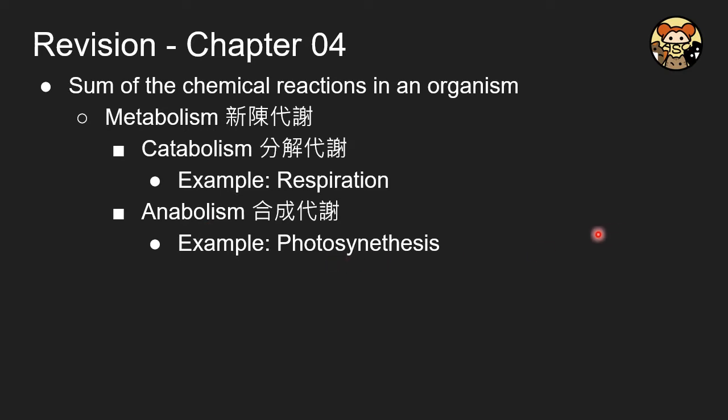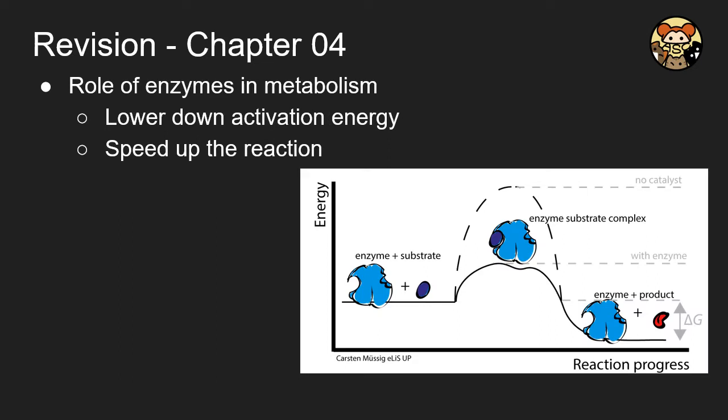And for the role of enzymes, we may illustrate in this diagram to lower down the activation energy. Activation energy is like the height of this hill. Originally it will be this dotted line at this height, and now with the presence of enzyme, the activation energy is lowered down to the point indicated, which is much lower. And because the point is lower, the reaction is speeded up—that is more likely to happen.